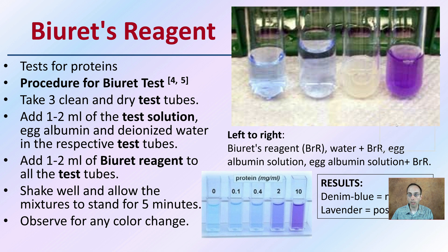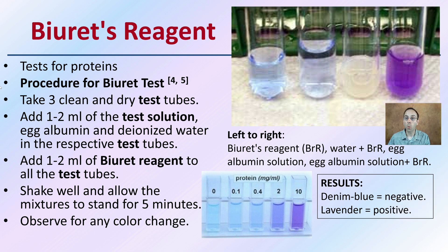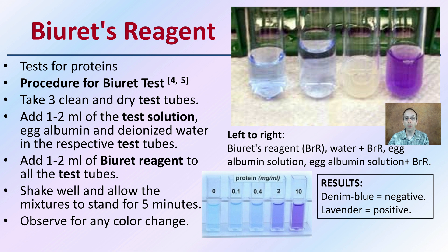Finally, we have Biuret's reagent, which tests for proteins. Allow this reaction to occur for up to five minutes — it is not a quick reaction. A denim-blue coloration is negative, while a lavender-purple coloration indicates a positive test. Hopefully this helps determine what common household white powders you're dealing with. Remember to follow all laboratory procedures and stay safe, even with low-toxicity substances, as some of the reagents require careful handling.